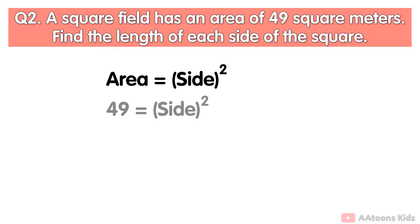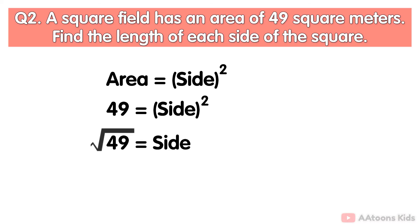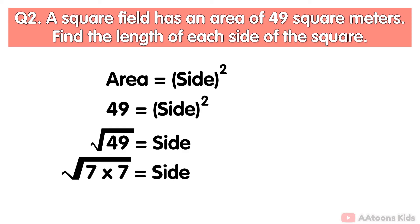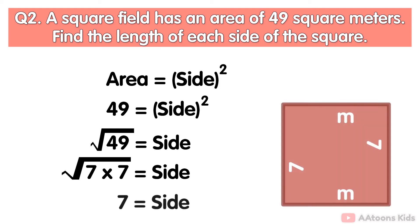Put 49 in the formula. Then we transfer the right-hand side, taking the square root of 49. You can write root 49 as 7 multiplied by 7, so we take out 7 from root 49. Now the side length is 7 meters, so the length of each side of the square is 7 meters.